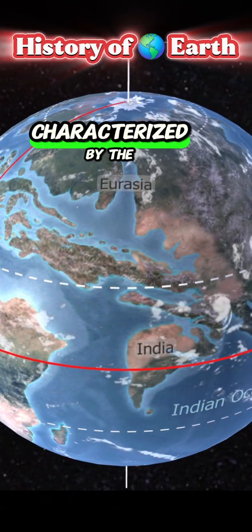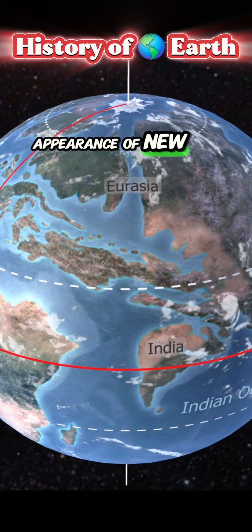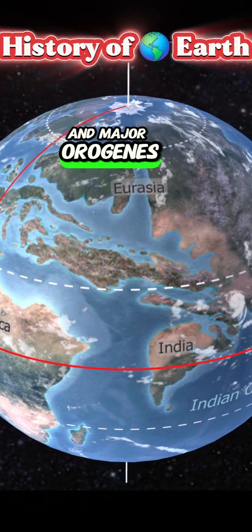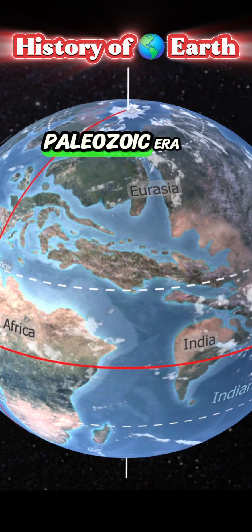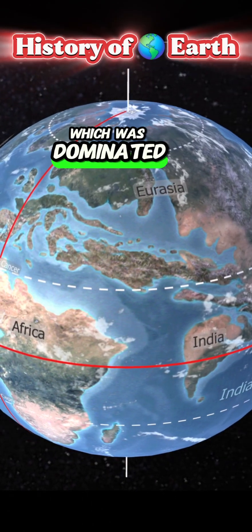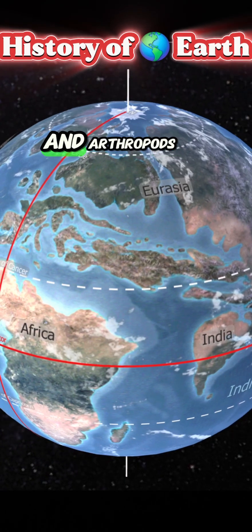Each era is characterized by the large-scale appearance of new species and major orogenies. The Caledonian and Variscan mountain belts formed in the Paleozoic era, which was dominated by calcareous animals and arthropods.